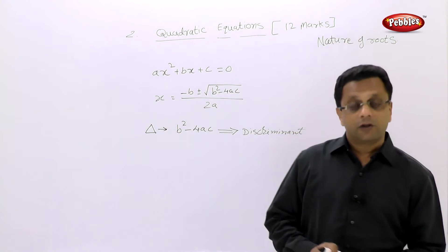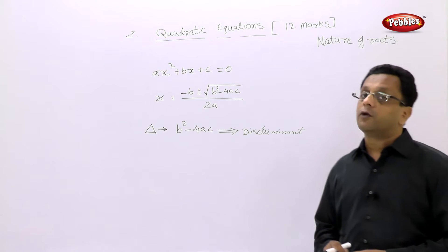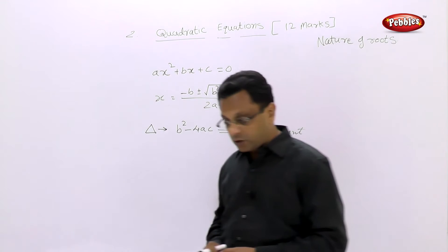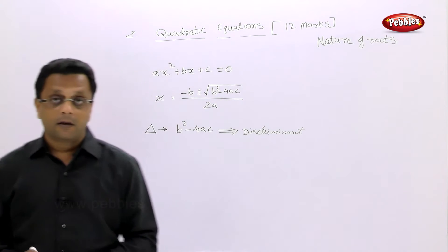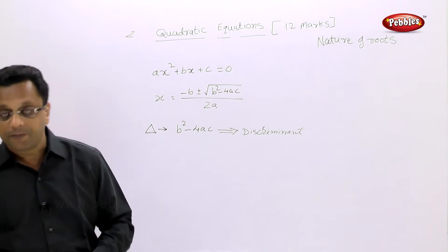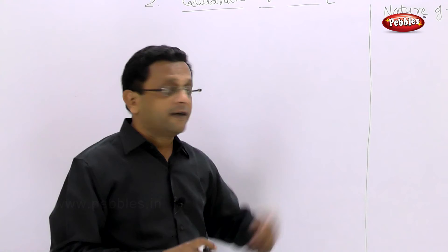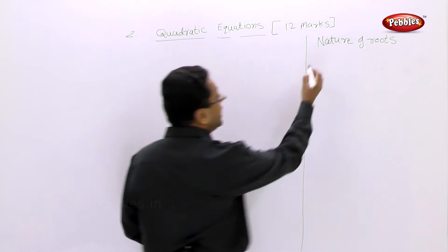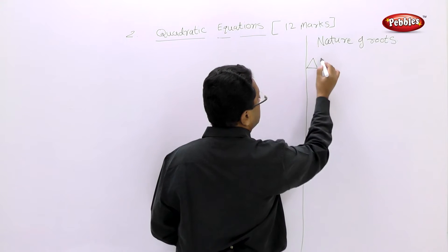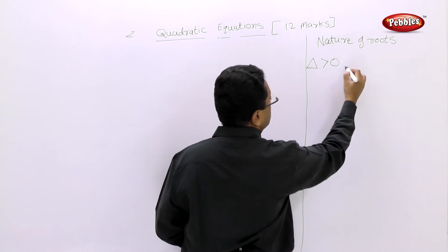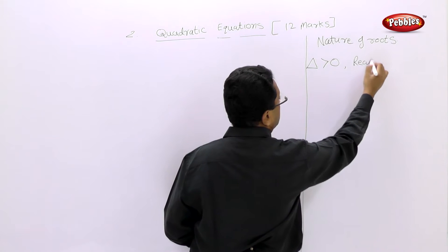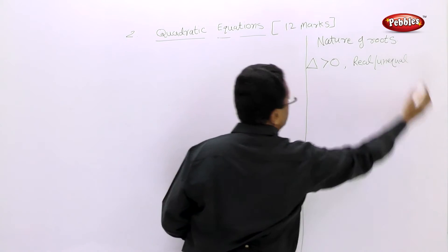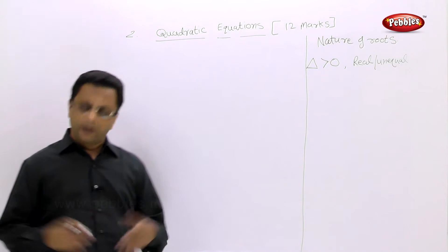Based on delta, we can judge the nature of the roots. Let us write down the nature of roots depending on delta. If delta is greater than 0, then the roots are real and unequal — that is, different roots.